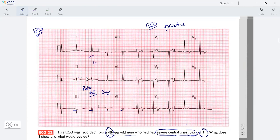Axis is normal. Looking at leads 2, 3, AVF - normal. 1 AVL also normal.